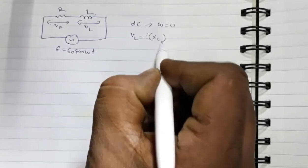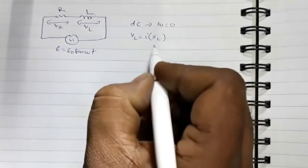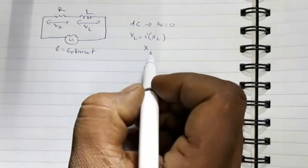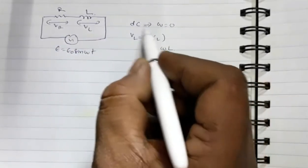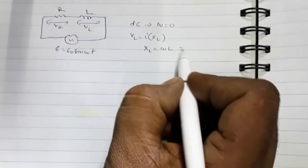i times XL, where XL is the inductive reactance of the inductor. XL is given by omega L. For DC, omega is zero, so XL equals zero.